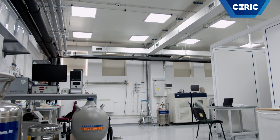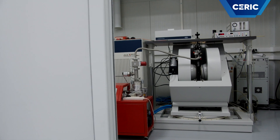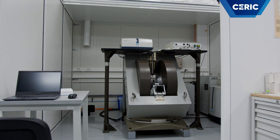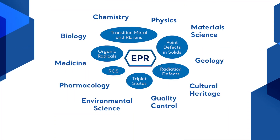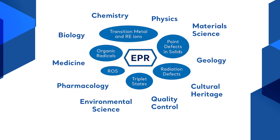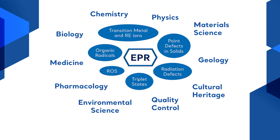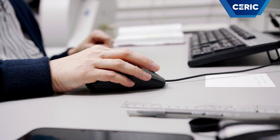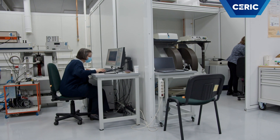Electron-paramagnetic resonance, or EPR, is a magnetic resonance spectroscopic technique used to study species with unpaired electrons, such as transition metal ions, free radicals, point defects in solids, or defects induced by radiation with light or particles. EPR detects the transitions induced by microwave radiation between the energy levels of electron spins in the presence of a static magnetic field, which removes the degeneracy of the spin states. The transition energies are affected by the local environment of the unpaired electrons. Therefore, the EPR spectra can provide structural and chemical information about the paramagnetic species.